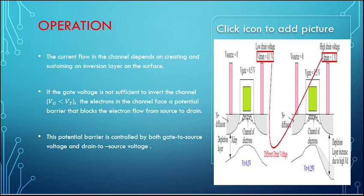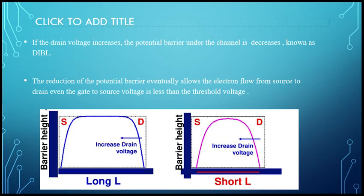When the drain voltage increases, the potential barrier under the channel decreases. This is known as DIBL. The reduction of the potential barrier eventually allows electron flow from source to drain even when the gate-to-source voltage is less than the threshold voltage.